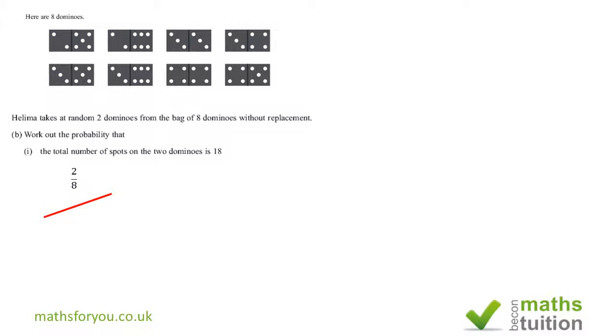So the probability of picking the first 9 is 2 over 8, and having picked the first 9 we have only 7 dominoes left, so the probability of picking the next 9 is going to be 1 over 7. So the probability of picking the first 9 and the next 9 will be 2 over 8 times 1 over 7, and we have 2 over 56. You can actually simplify this if you wish to 1 over 28, but that's fine as it is.